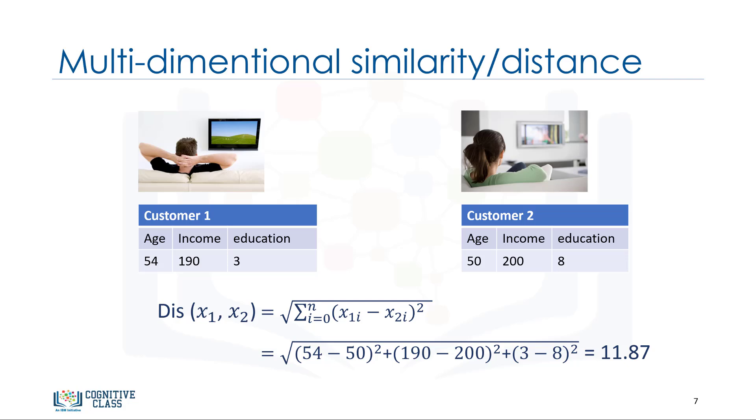There are other dissimilarity measures as well that can be used for this purpose, but it is highly dependent on data type and also the domain that clustering is done for it. For example, you may use Euclidean distance, cosine similarity, average distance, and so on.